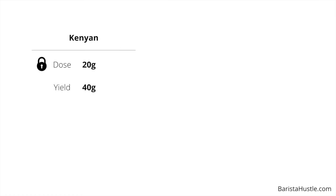We're going to start with a yield of 40 grams, which creates a yield multiple of two. We know that this Kenyan coffee won't be so great with a multiple less than two because lightly roasted acidic coffees can be a little unpleasant at higher strengths. Let's aim for a 27-second shot time because that's going to leave us room to move — it'll be in the middle of the road. Now these numbers will change throughout the video as we explore the system and coffee.